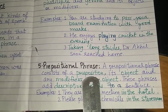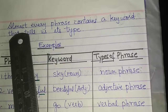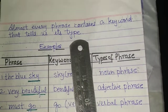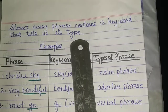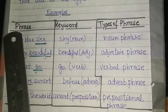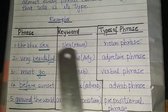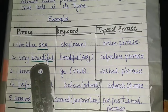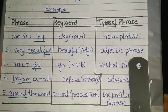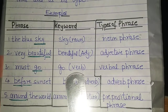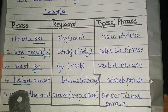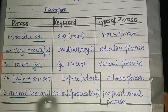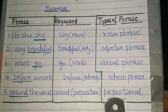These are all five types of phrases. Almost every phrase contains a keyword that tells us its type — meaning from every phrase you can find out which type it is. For example: 'in the blue sky' — the word 'sky' shows a noun, so it is a noun phrase. 'Very beautiful' — 'beautiful' is an adjective, so it is an adjective phrase. 'Must go' — 'go' shows a verb, so it is a verbal phrase. 'Before sunset' — 'before' shows an adverb, so it is an adverb phrase. 'Around the world' — 'around' is a preposition, so it is a prepositional phrase.